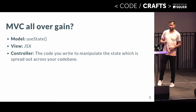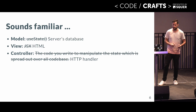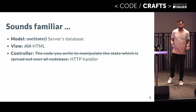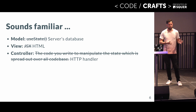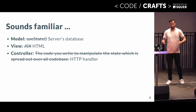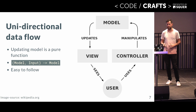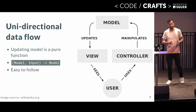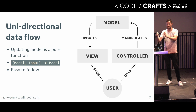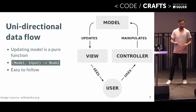That actually sounds very familiar to how we did web development with PHP. The model is the service database. The view is the HTML that we render. And the controller is the HTTP handler that generated the view. What's cool about MVC is its unidirectional data flow — that's what makes it so easy to understand. We take an input from the user, we process it, we apply it to the model, the model generates a view, and then the cycle continues. So you can already tell it's going to be about circles.